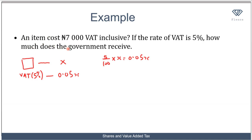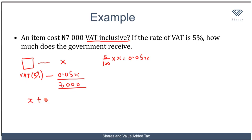The value added tax paid is 0.05x. We are told the total cost — the item price plus VAT, which is what 'VAT inclusive' means — is 7,000 naira. So x plus 0.05x equals 7,000. The amount the government receives is 0.05x, but to calculate this we first need to find x. We know x plus 0.05x equals 7,000, which simplifies to 1.05x equals 7,000.